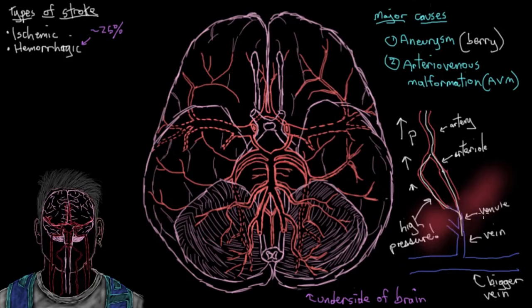While AVMs can occur really anywhere in your body, they often appear within the brain or within the central nervous system. Why do they happen? They're congenital — due to a defect of blood vessel formation during development. So those are a couple of the major causes of hemorrhagic stroke.